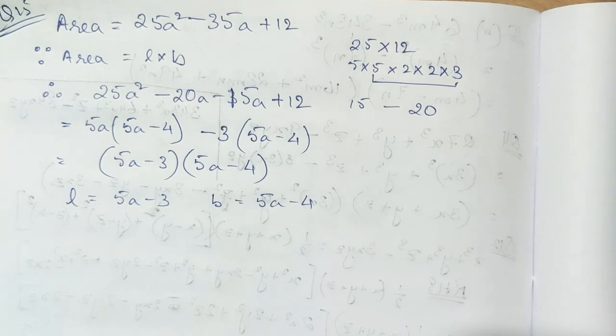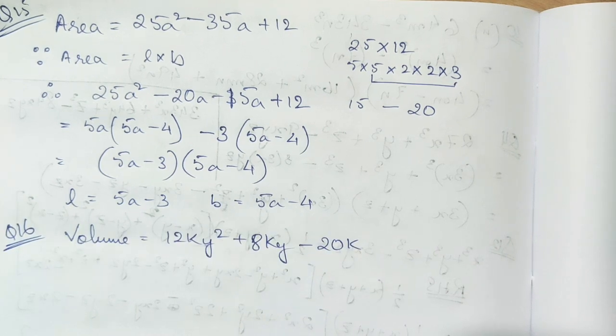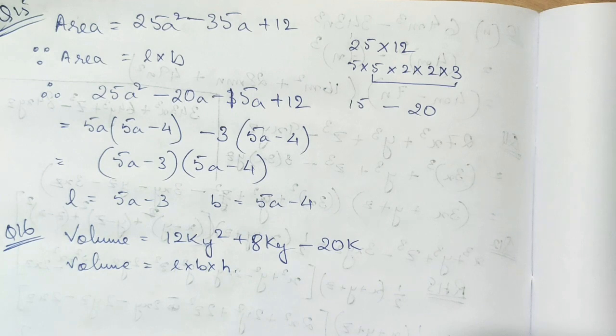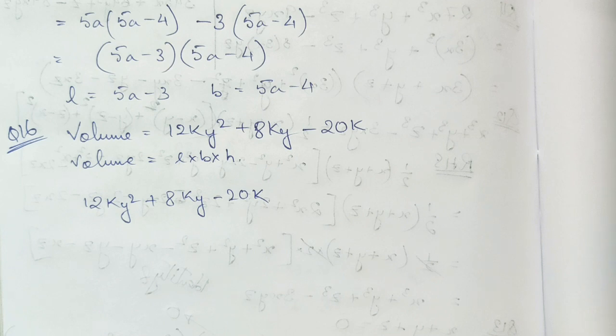Now the next question is also similar, but this time volume is given. As per the formula of volume, the length and breadth and height are the factors of volume. So we will factorize this expression. Now students, I hope you remember that the first step is always taking out common, so 4k we can take common.